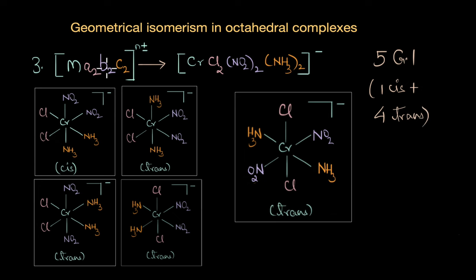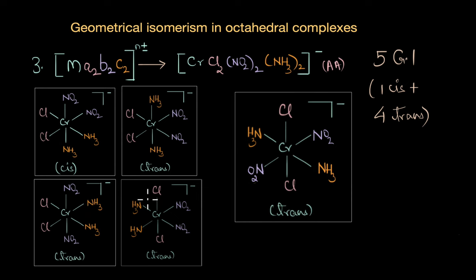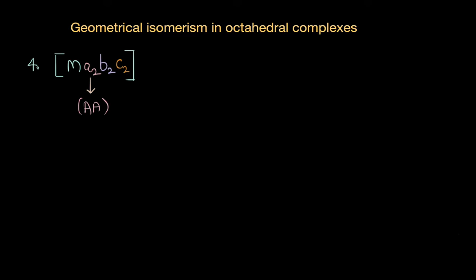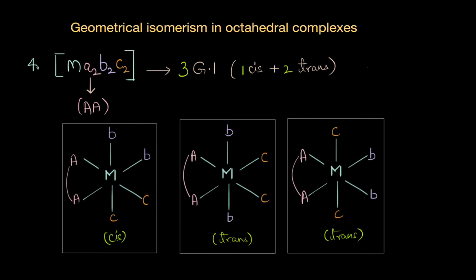Now let's try an interesting activity: what if we replace one of these ligands with a bidentate ligand, say 'aa'? For M(aa)B₂C₂, do we get one cis and four trans isomers, or more or less? Try drawing the structures. When we replace one ligand with a bidentate ligand, we end up getting three geometrical isomers: one cis and two trans.